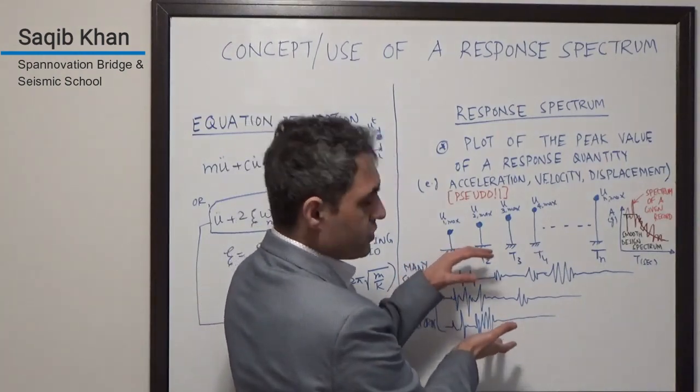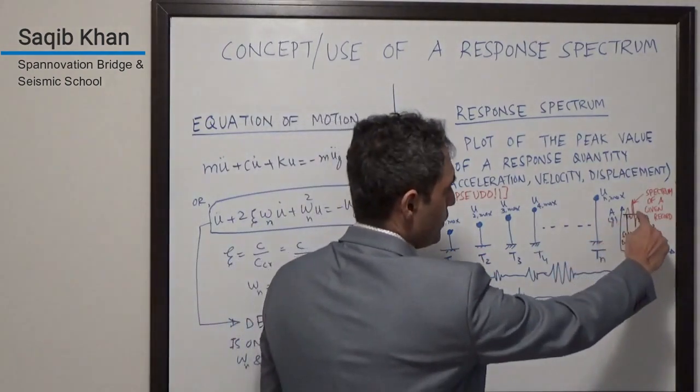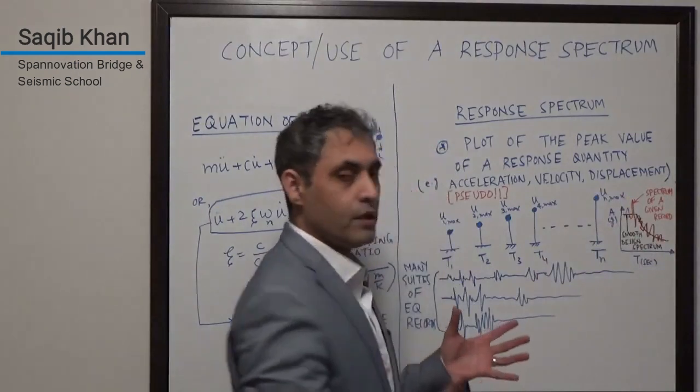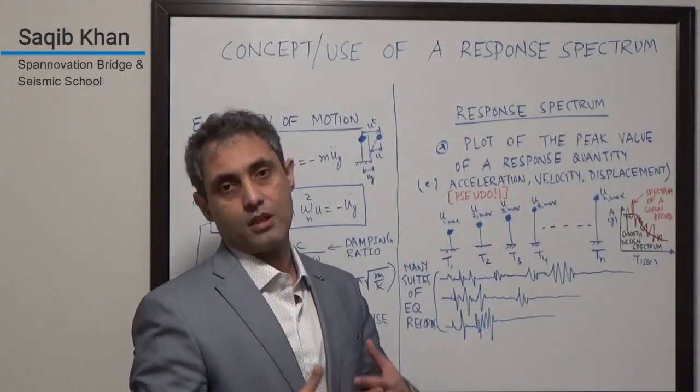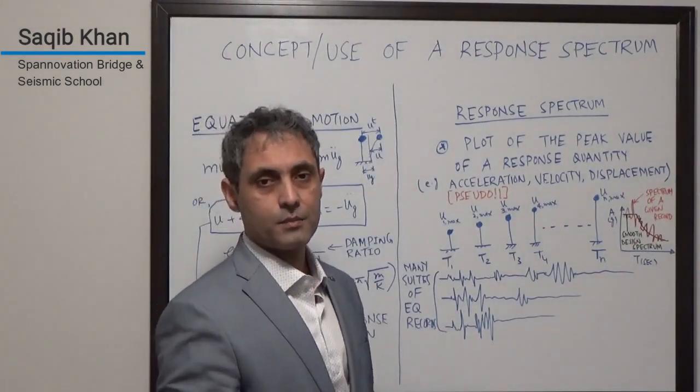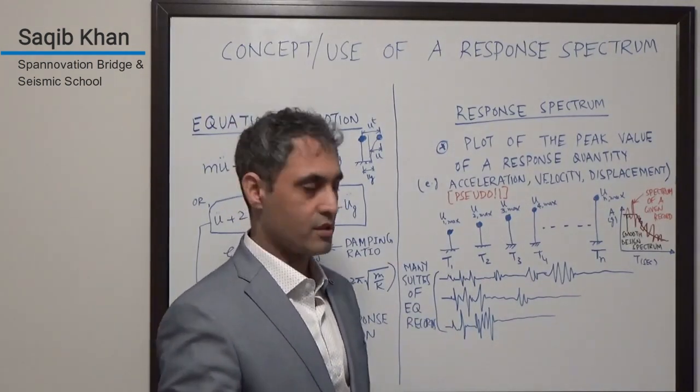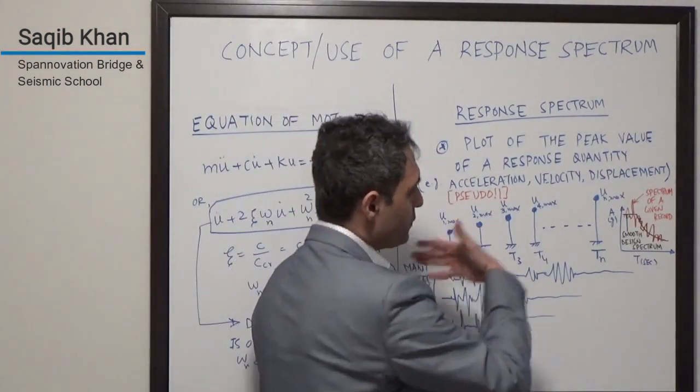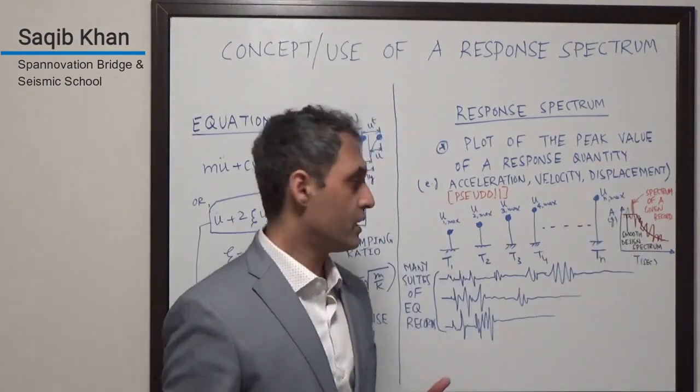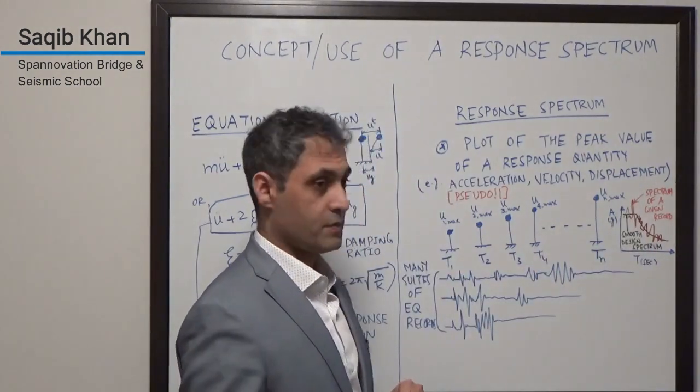Now, after we've run this suite, we can then come up with what we call a smooth design spectrum, which may be an average or a median spectrum or a median plus one sigma deviation, median plus two sigma deviations. We can decide what we want to use in terms of the smooth design spectrum.